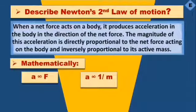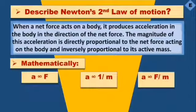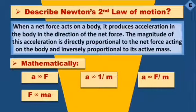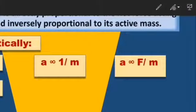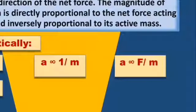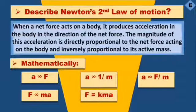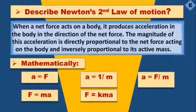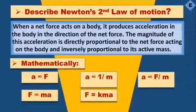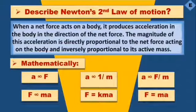Combining both proportionality equations, acceleration A is directly proportional to F divided by M. To convert proportionality to equality, we introduce a proportionality constant K: A = K × (F/M). For Newton's second law, when the value of K equals 1 — which defines the unit system — the equation becomes F = MA.